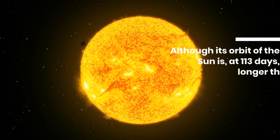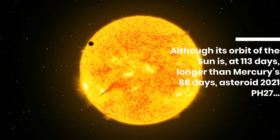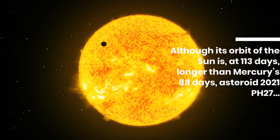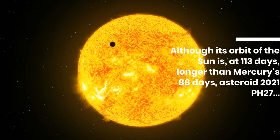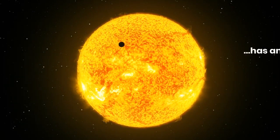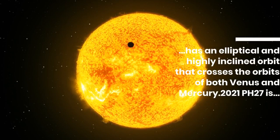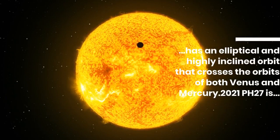Although its orbit of the Sun is, at 113 days, longer than Mercury's 88 days, asteroid 2021 PH27 has an elliptical and highly inclined orbit that crosses the orbits of both Venus and Mercury.